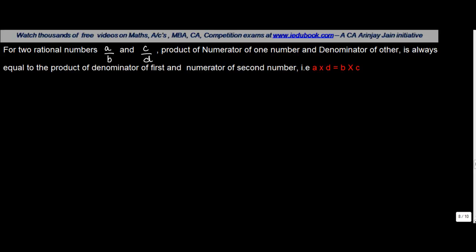This property stands like this. Let's say for example you have two rational numbers, a upon b and c upon d. A, b, c, d can have any value and this will hold true for all of them. Let me write this as c upon d.